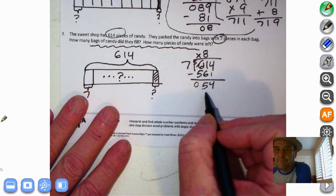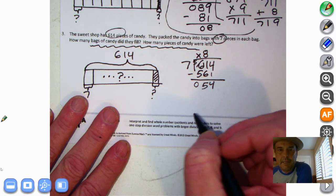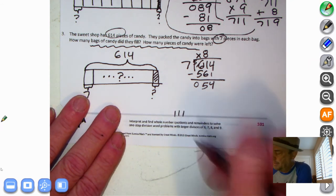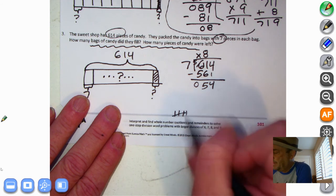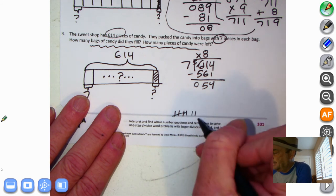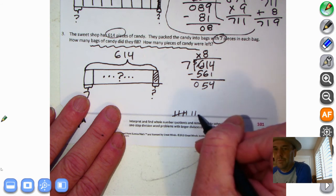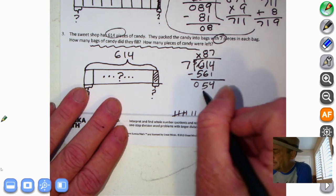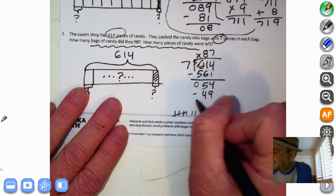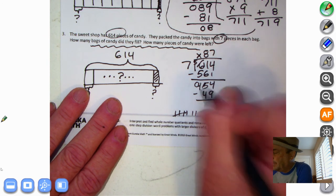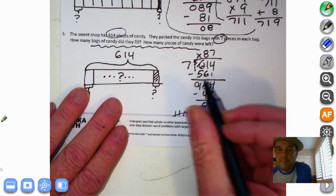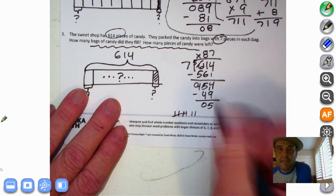All right, seven into 54. Let's count by sevens again. Seven, 14, 21, 28, 35, 42, 49. Getting close. Oh, the next one would be 49 would be 56 right there. Seven times eight. So this looks like it's going to be seven times seven, right? 49. We subtract. 14 minus nine is five. Four minus four is zero. And look, there's our remainder. We can't divide that five by the seven, right? So we have 87.